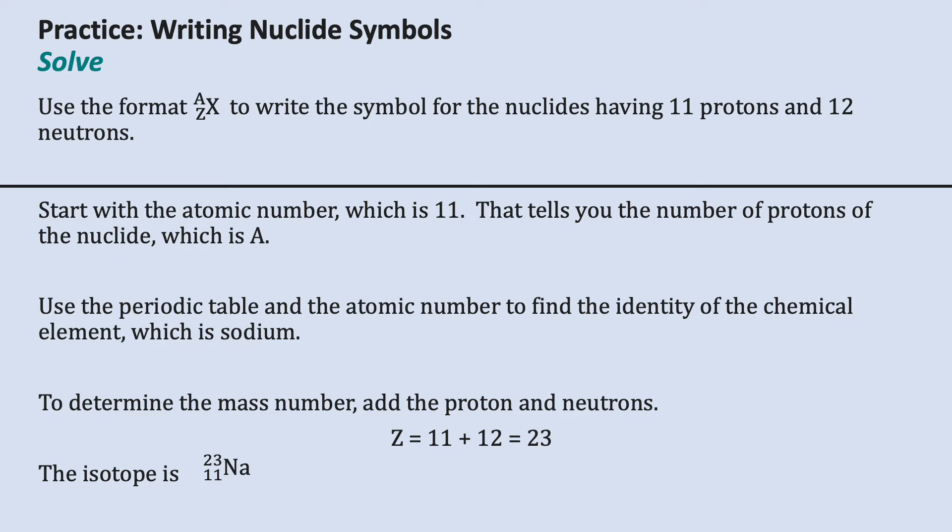Starting with the atomic number, which is 11, this tells you the number of protons of the nuclide, which is A. It also tells us which element to look up in the periodic table. The element we're looking for is sodium, which has the symbol Na.